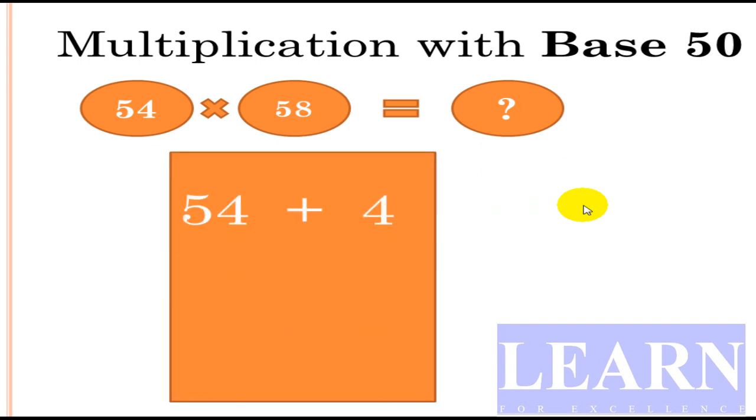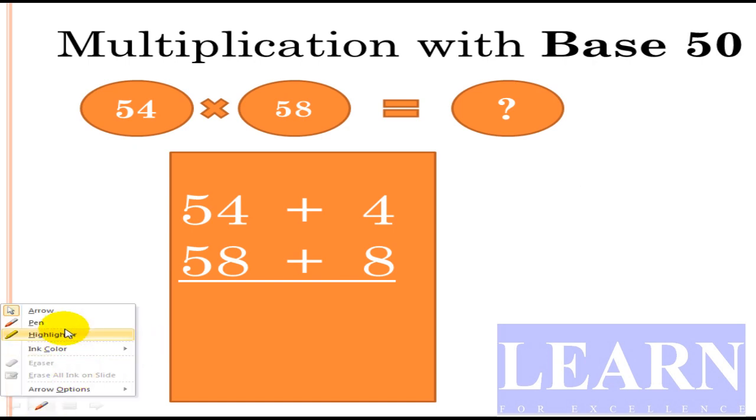4 is the deviation from 50. Similarly, 58, because 8 is the deviation from 50. So after writing it in this format, we'll just add 54 plus 8 or 58 plus 4. Cross addition: 54 plus 8 gives 62.